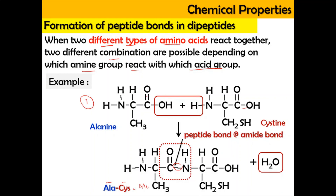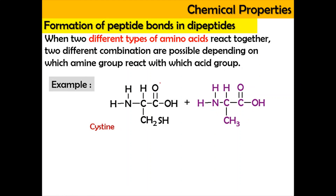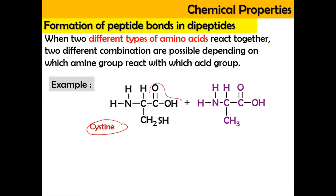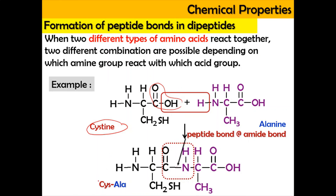In possibility one, we use the carboxylic group of alanine and the amine group of cysteine. But in possibility two, we can use the carboxylic group of cysteine and the amine group of alanine. The same process happens: –OH and –H are eliminated as water, and the C=O and N–H are connected together as the peptide bond or amide bond. Because cysteine is now on the left-hand side, we write it as CYS-ALA, and the byproduct is water.